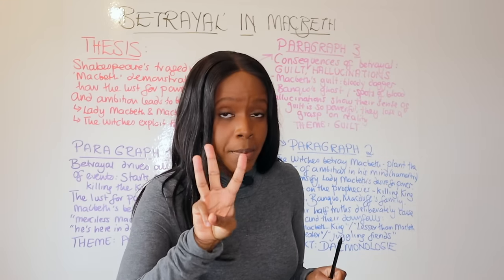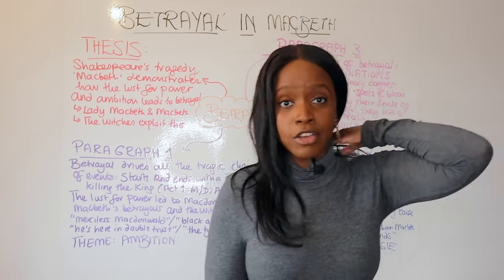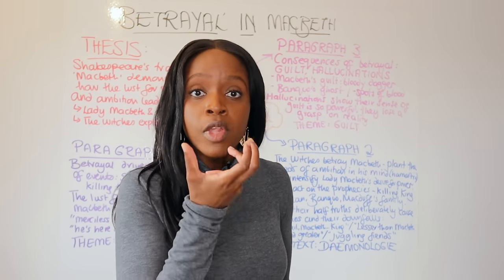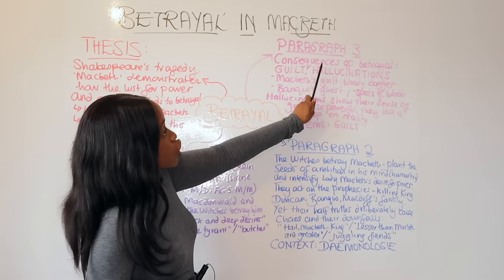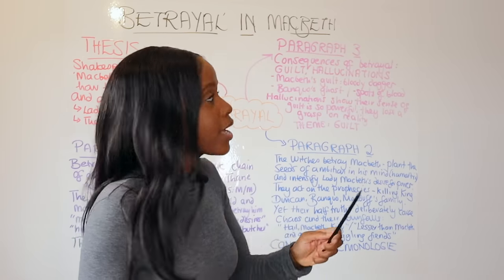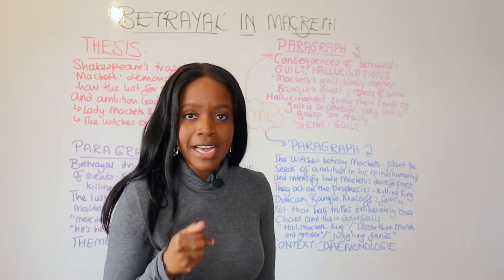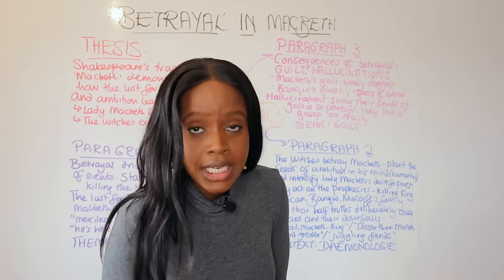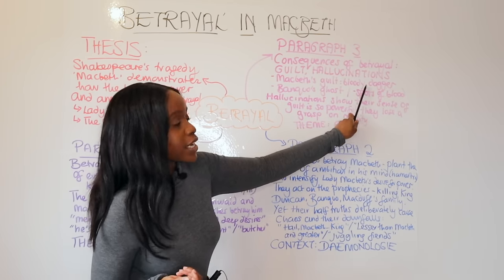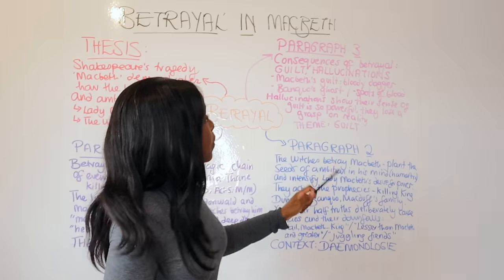Your third paragraph should draw a contrast. The first two points cover Macbeth's betrayal driving tragic events, and the witches deliberately betraying Macbeth. Your third paragraph contrasts this by discussing the consequences of betrayal — specifically how betrayal sparks guilt within both Macbeth and Lady Macbeth, evident through their hallucinations. Shakespeare shows that once you betray somebody, you will be haunted by supernatural hallucinations. Before Macbeth kills the king, he hallucinates a bloody dagger, asking 'is this a dagger which I see before me?'